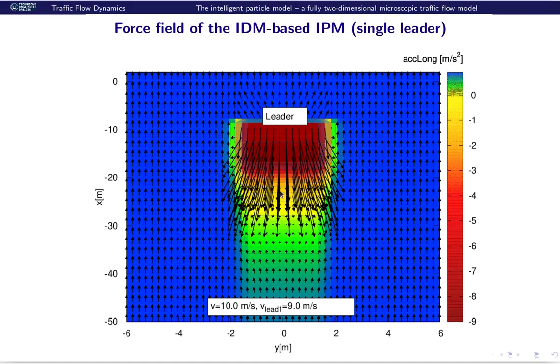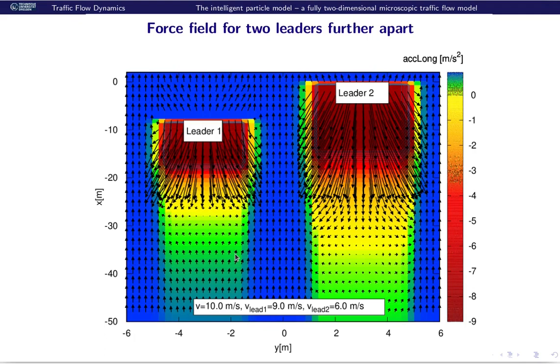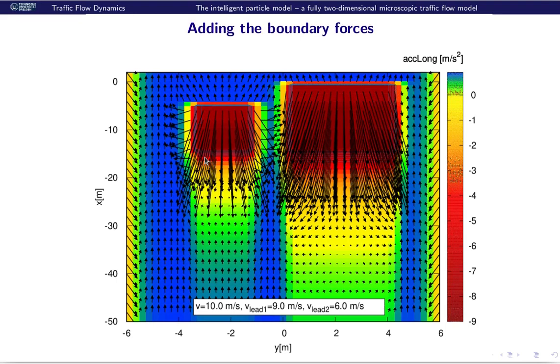Now we come to a more complicated situation. Vehicles, the leading vehicles are further apart, then the follower could also drive in between. Finally, we can also add the road boundaries. And you see the road boundaries both lead to a lateral force going away from the boundaries, but also to a longitudinal force. That means if the road gets too narrow, then the vehicle will just stop.